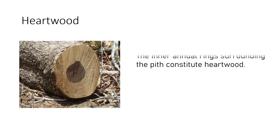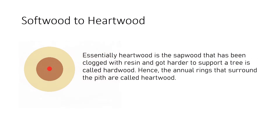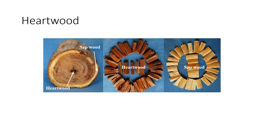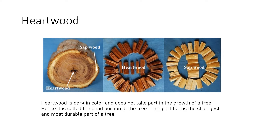Heartwood is formed by the inner annular rings that are dark in color surrounding the pith. Essentially, heartwood is the sapwood that has been clogged with resin and hardened to support the tree. The sapwood layers are light in color, but with age the sap layer hardens and forms heartwood. Hence, the annular rings that surround the pith are also called heartwood.